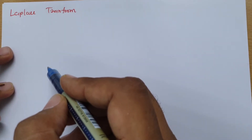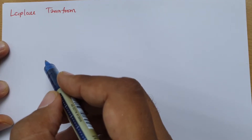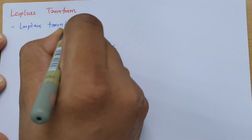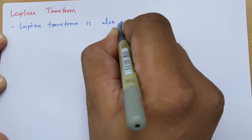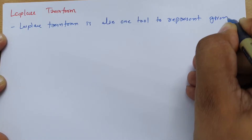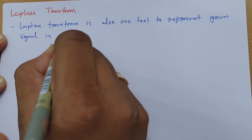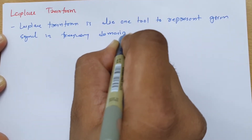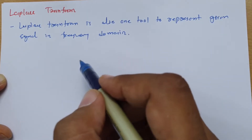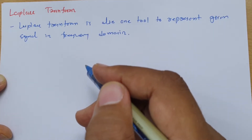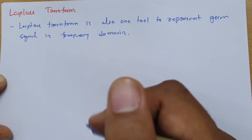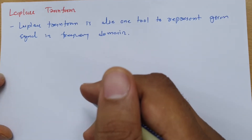So what is Laplace transform? Laplace transform is a tool used to represent a given signal in the frequency domain. Like other transforms such as Fourier transform and Z-transform, which also represent given signals in the frequency domain, Laplace transform is similarly a tool for frequency domain representation.